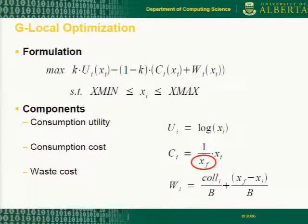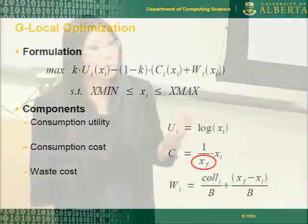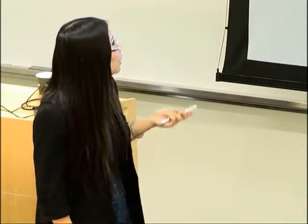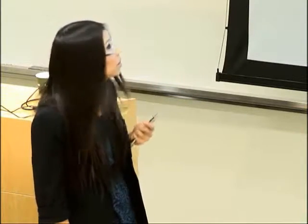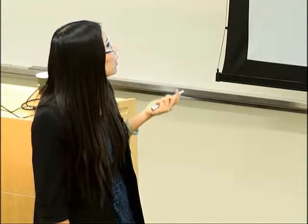Based on these intuitions, we formulate the globalized local optimization, called G-Local for short. I will explain the formulation in terms of its components. The first component is the consumption utility, which characterizes user behavior — how aggressively a user consumes resources. We choose the log function not for proportional fairness but for the sake of convexity, because we aim to support different types of fairness.